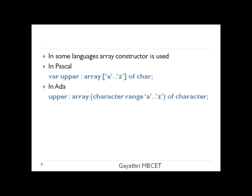In certain languages, the array constructor keyword is used to declare arrays. In Pascal, we write: var upper: array[A..Z] of char. In Ada also we use this array keyword: upper is declared as an array with character range A to Z of character. Here, the first 'character' denotes the element type and the second 'character' denotes the array type.